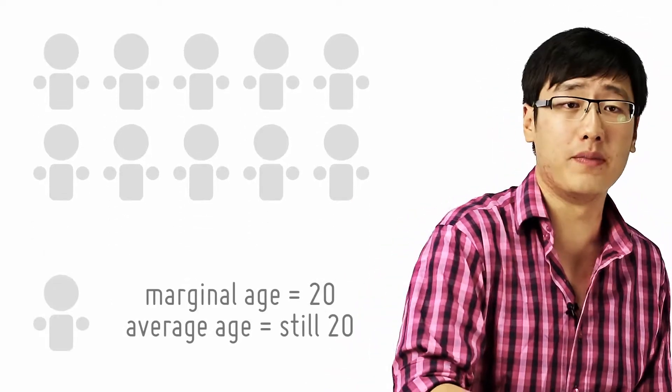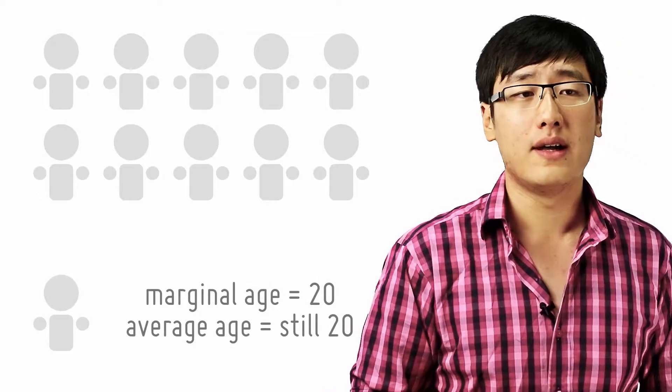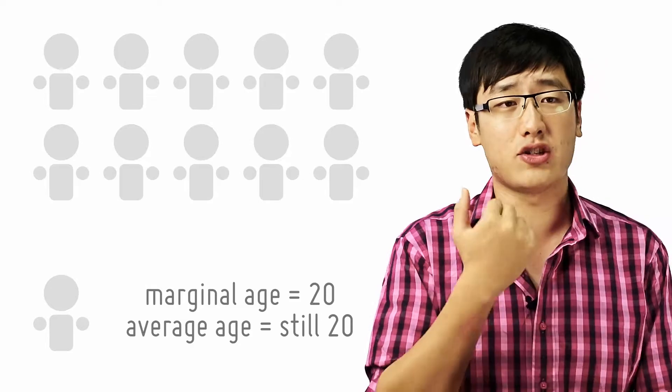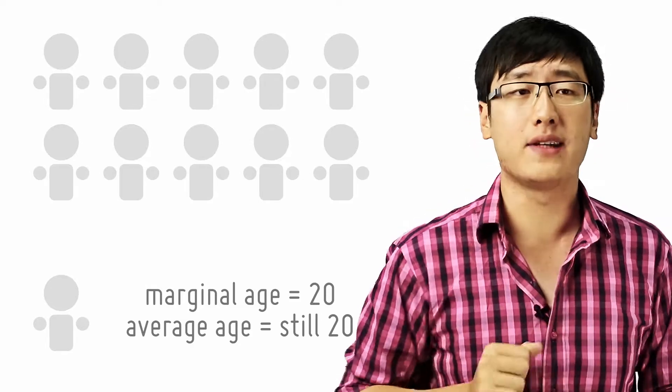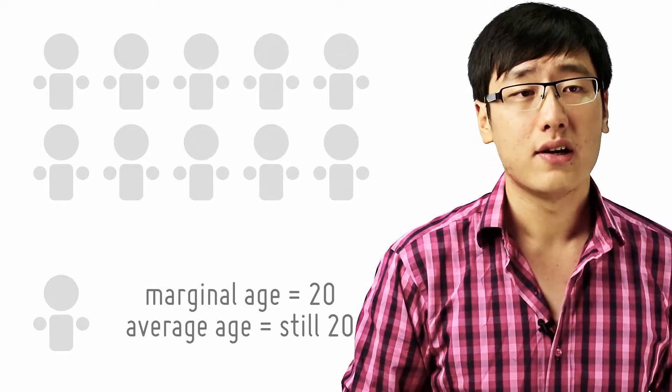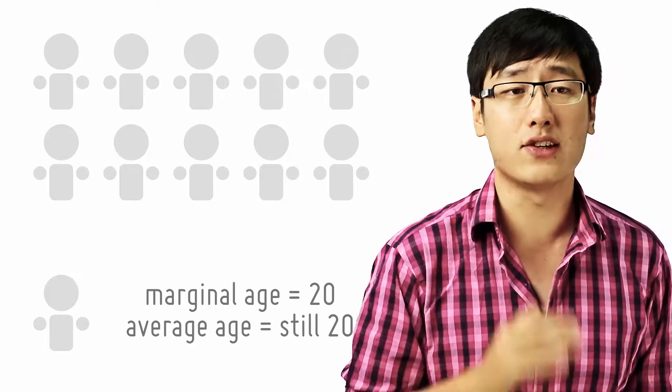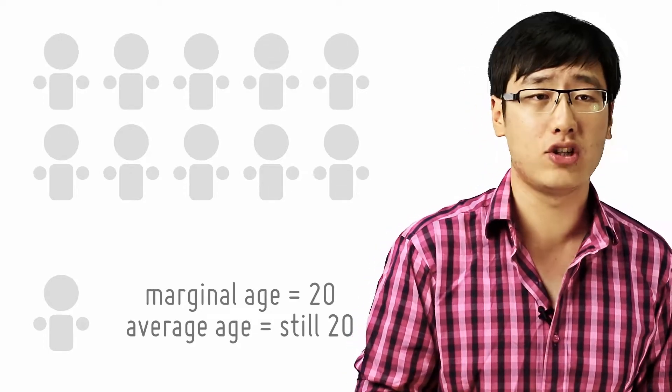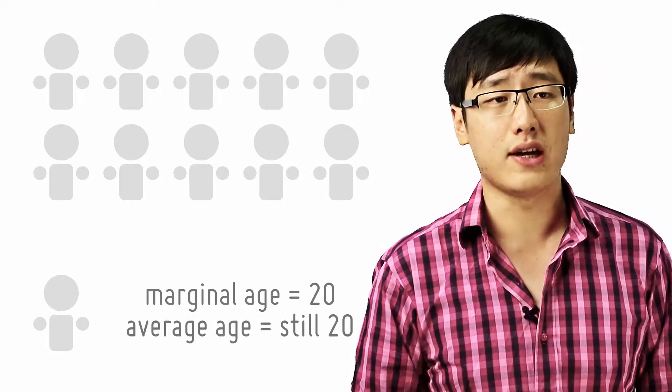Now if a 20-year-old enters the room, making it 11 people, this will not affect the average age. Of course the total age increases, but the average age does not change because the new person has the same age as the average. In this case, the marginal age is 20, and the average age does not change because the marginal age equals the average age.